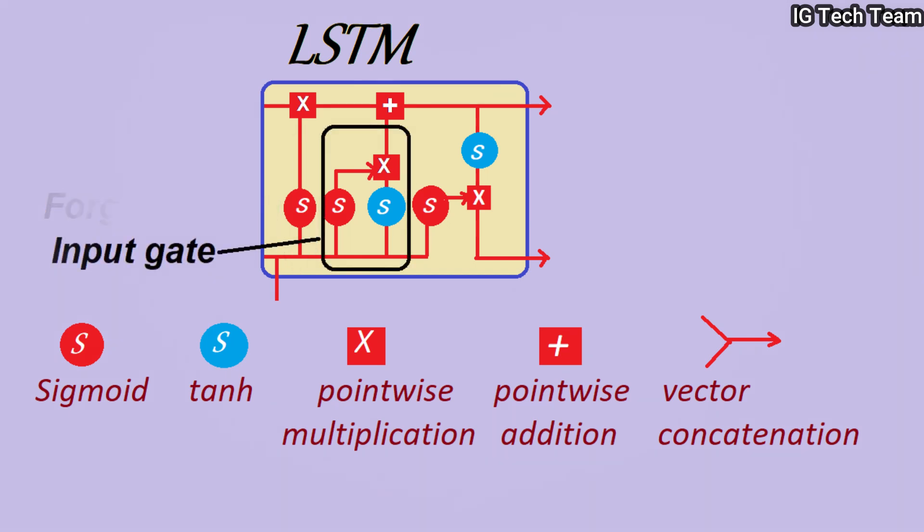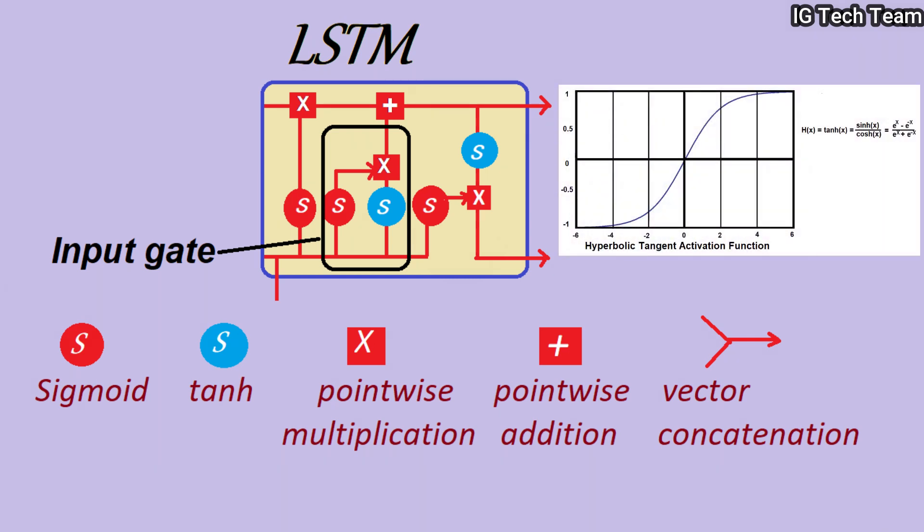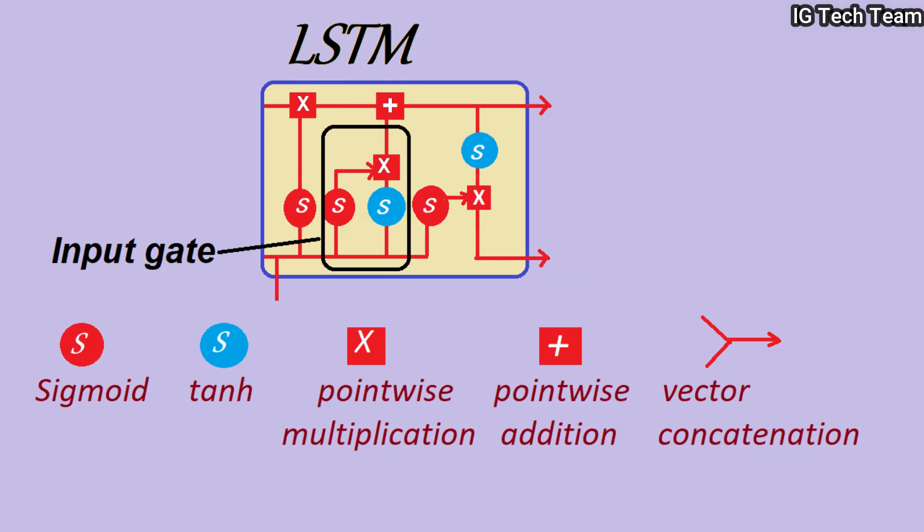Next we have the input gate. When each information is passed through this input gate, the information is passed through sigmoid and tanh functions. Sigmoid function is to identify whether the information is important or not, whereas tanh function is used to map values between -1 and 1. The results from these two functions get multiplied and passed further.